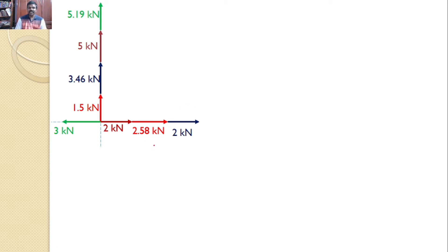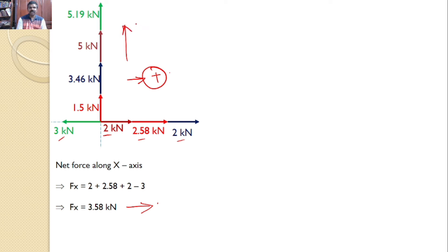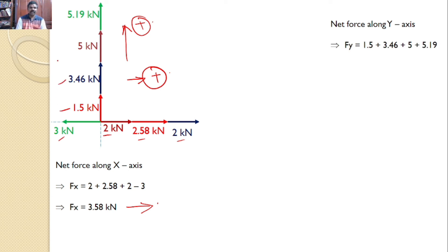Now we find the net force along the x-axis and y-axis. For the x-axis, taking the right direction as positive: net force = 2 + 2.58 + 2 − 3 = 3.58 kilonewtons, acting in the positive x direction. For the y-axis, all forces act upward, so net force = 1.5 + 3.46 + 5 + 5.19 = 15.15 kilonewtons in the vertical direction.